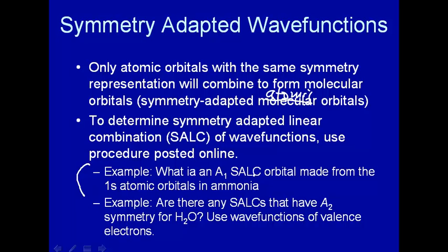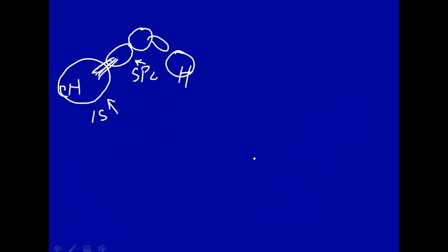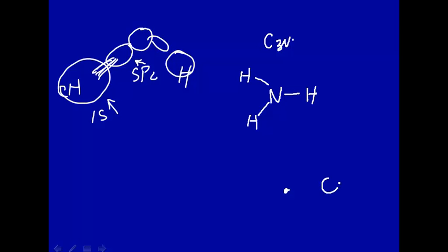What is an A1 symmetry-adapted linear combination of atomic orbitals made from the 1s atomic orbitals in ammonia? Well, let's take a look at ammonia. Ammonia — here I'll draw it — you have to imagine that these H's are going into the plane of the paper, and the ammonia nitrogen is sticking up out towards you. Ammonia has C3v symmetry, which means it has a C3 axis coming right out towards you, and you can rotate 120 degrees. So that H will go there, that H will go there, and so on.